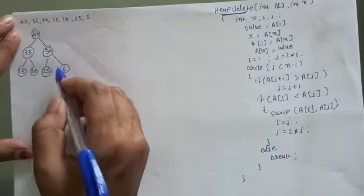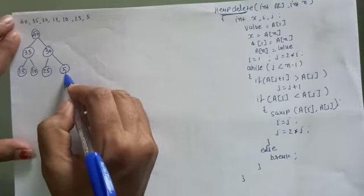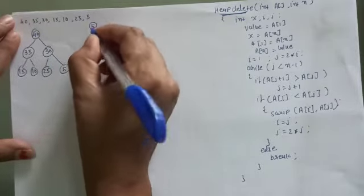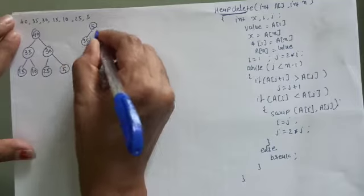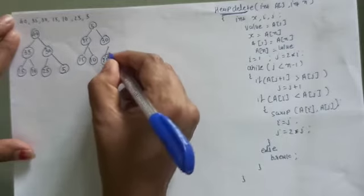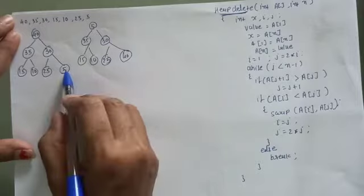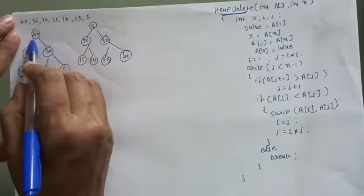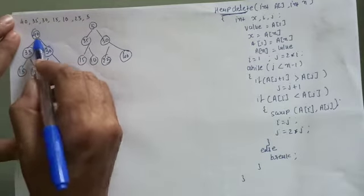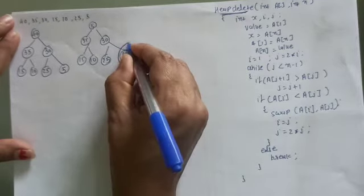The delete procedure works as follows: the element stored at the last index takes the place of the root. So the last index element — 5 — comes to the root, and the maximum highest-valued node (40), which resided at the root, is placed at the last index and is no longer part of our heap.